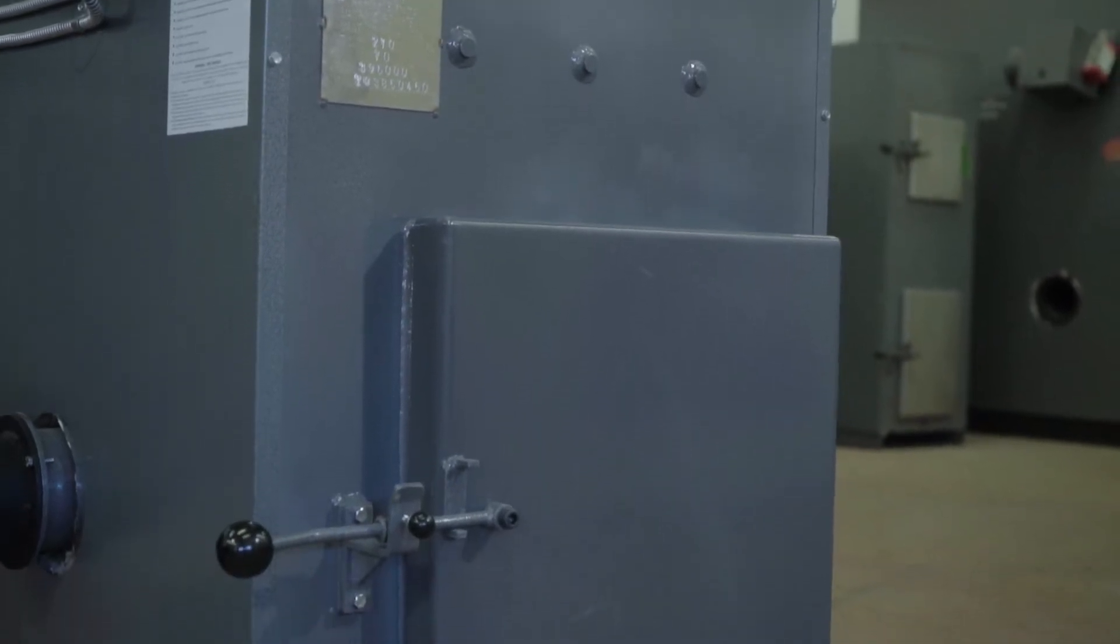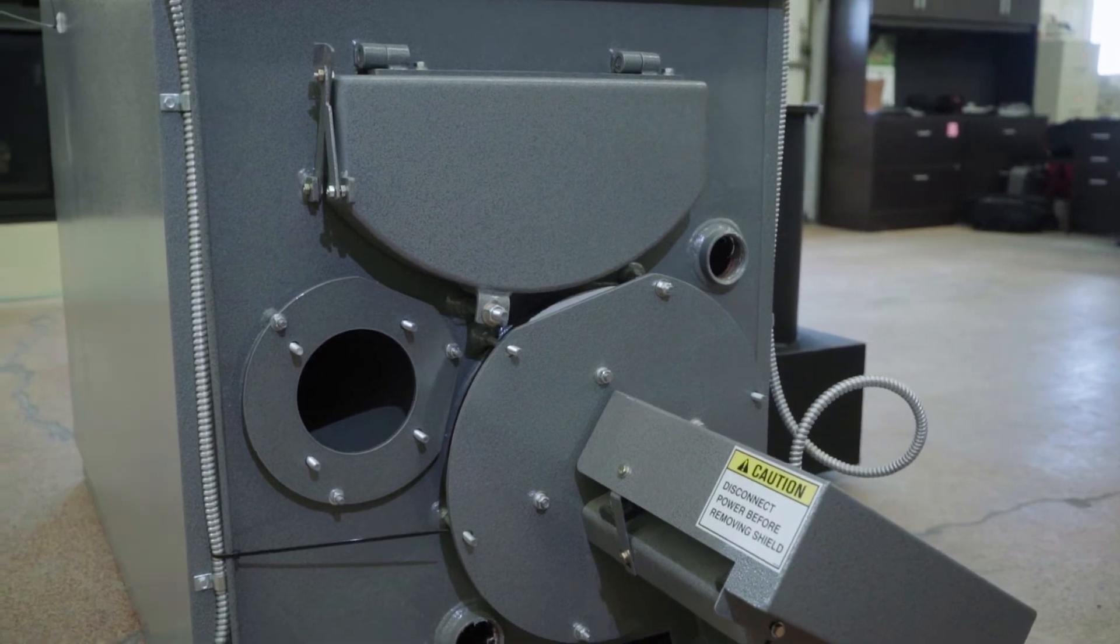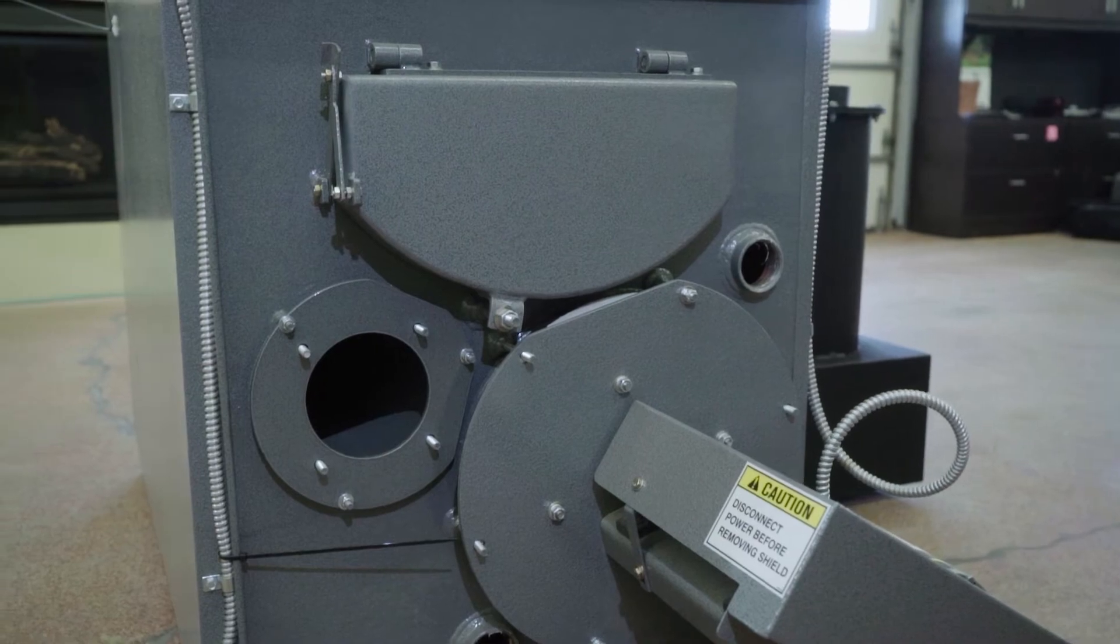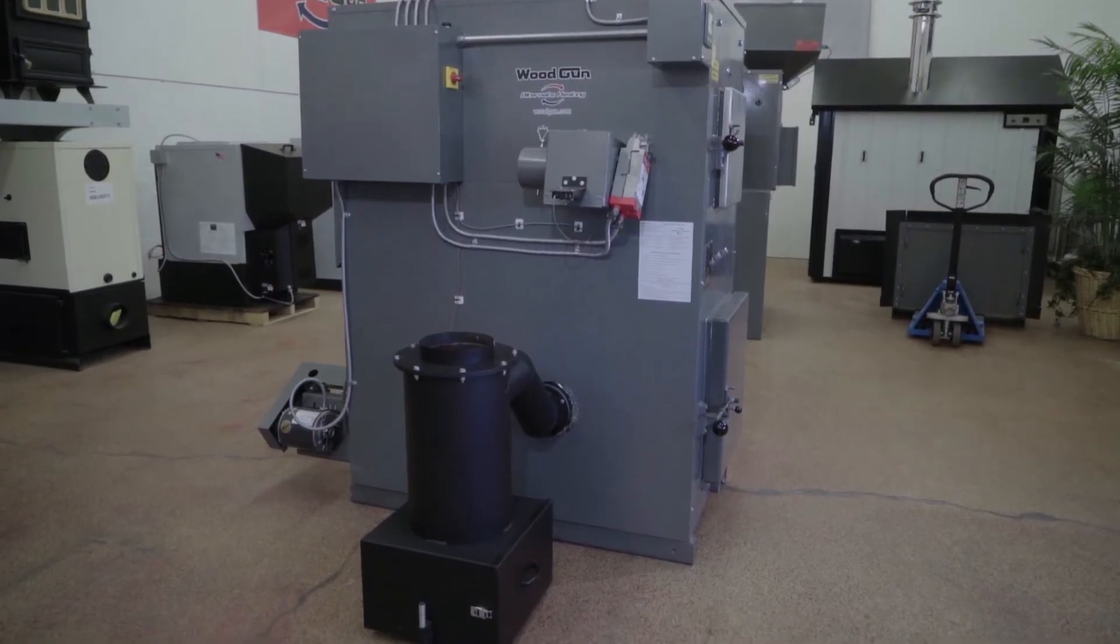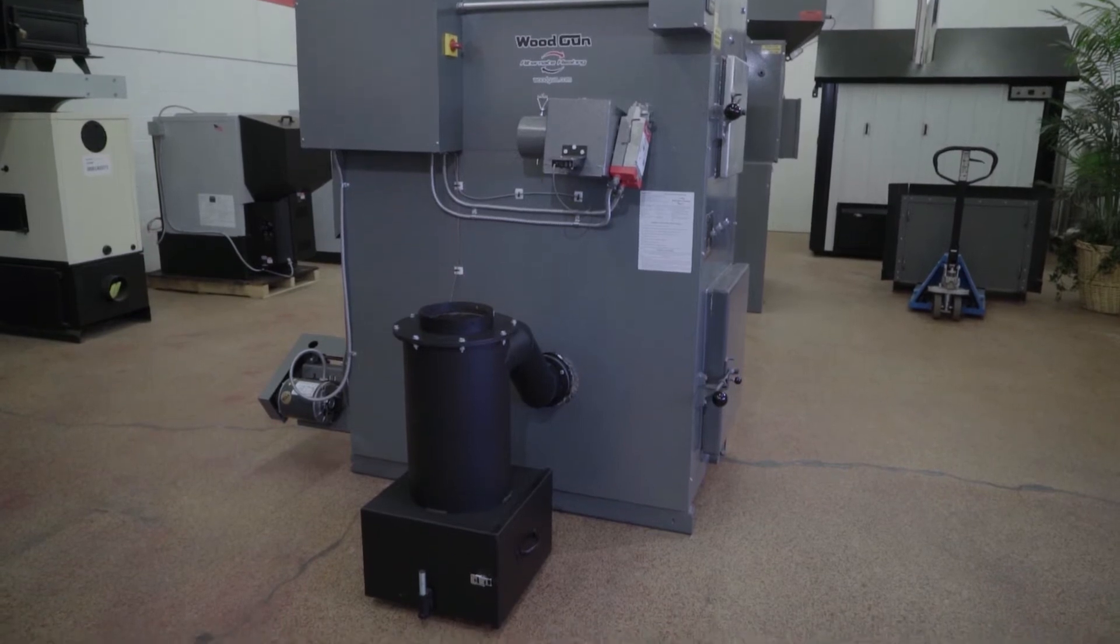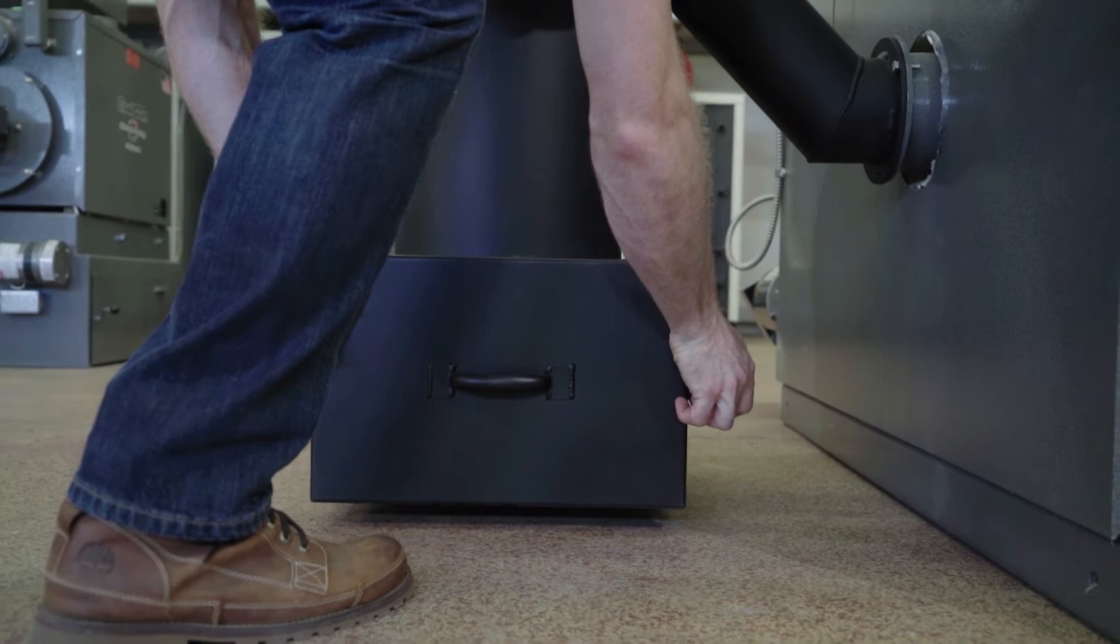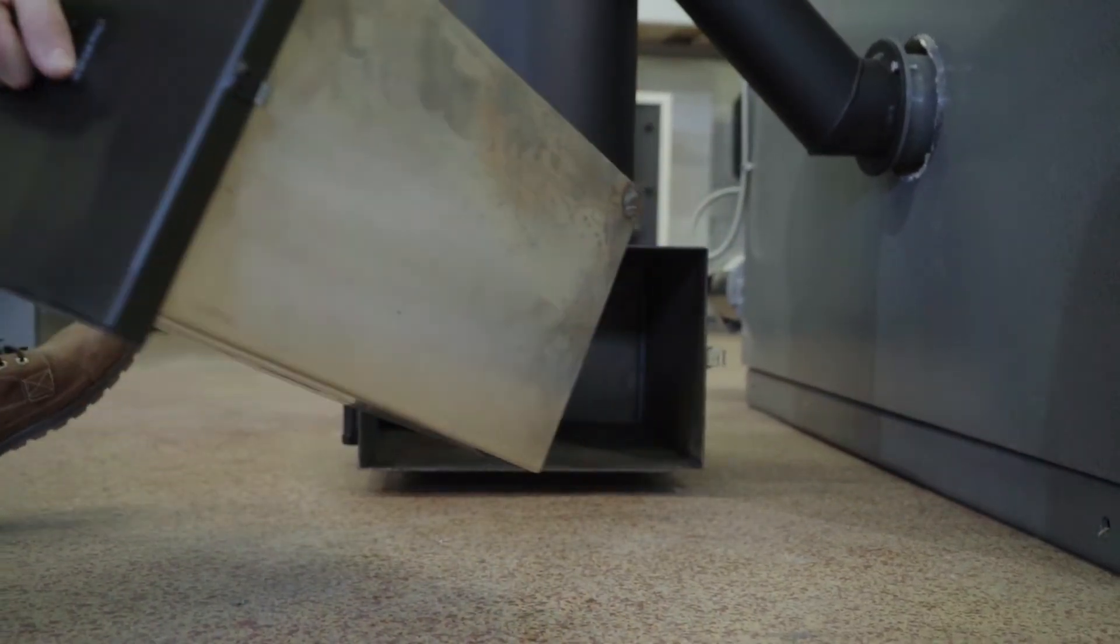There is a yearly maintenance which requires cleaning the heat exchanger, and it's very simple to do. Just remove the fan at the back of the boiler and simply scrape it out. You will also need to remove the cyclone and clean your flue at the cyclone exhaust port. The weekly maintenance is minimal and all it requires is emptying the ash from the ash pan and scraping the center tunnel with the provided ash scraper.